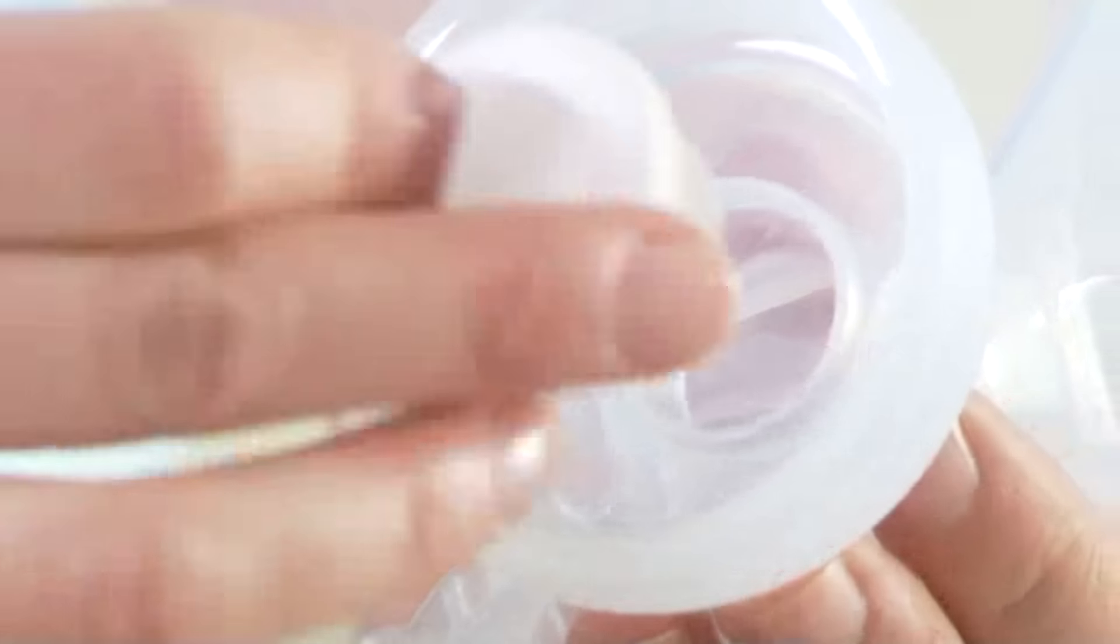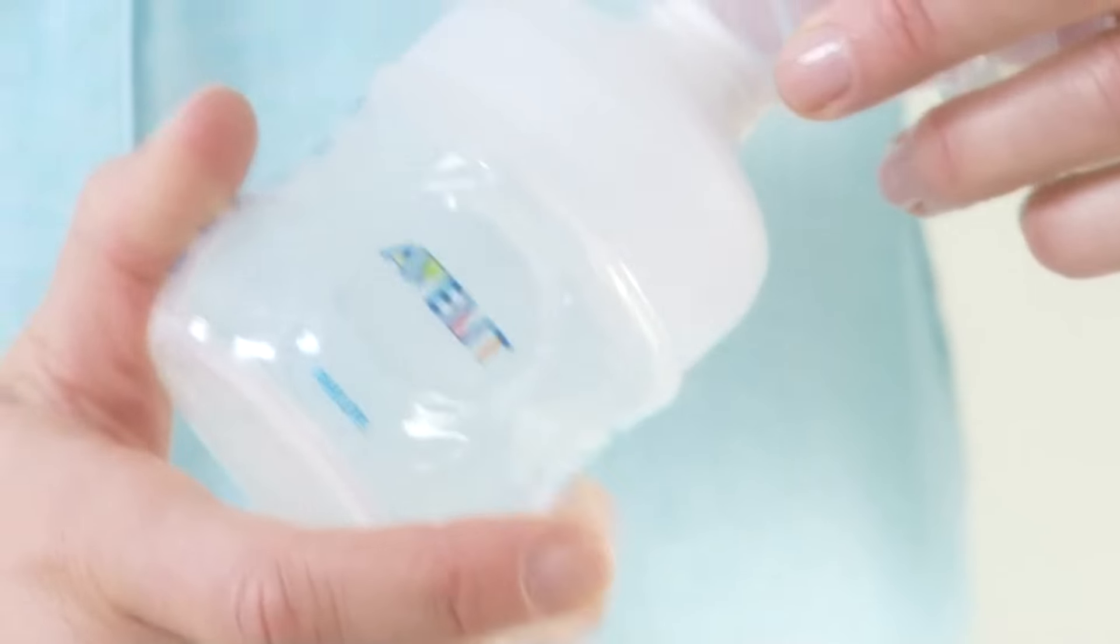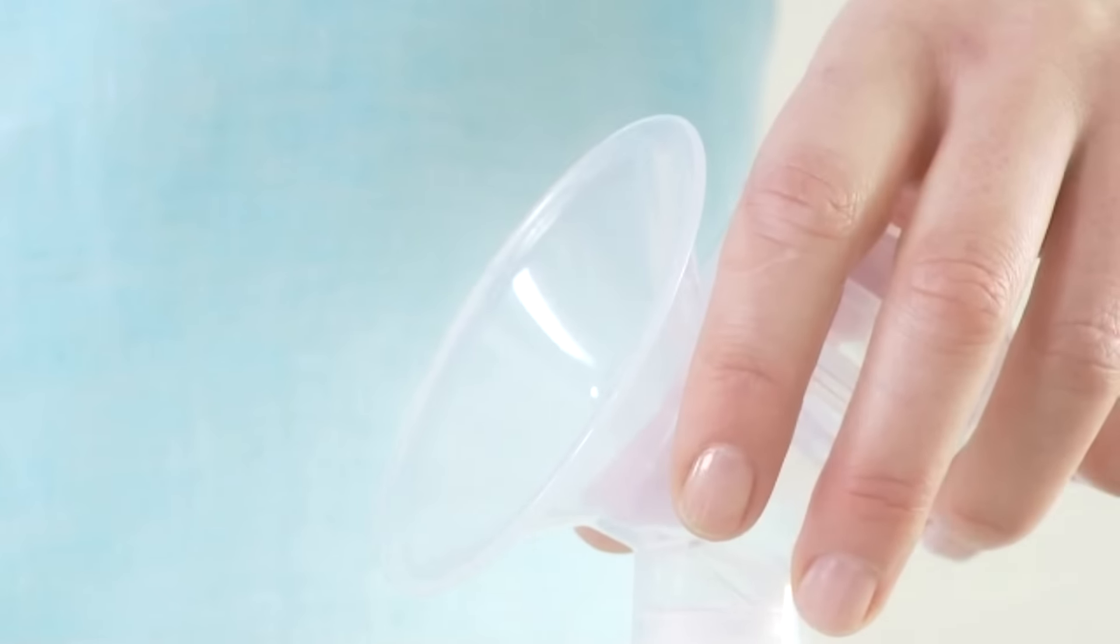Insert the white valve into the pump body from underneath and push it in as far as possible. Screw the pump body onto the Philips Avent natural bottle until it is securely fixed.